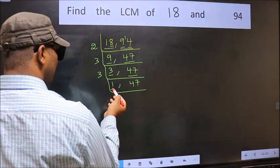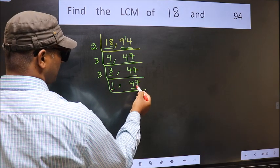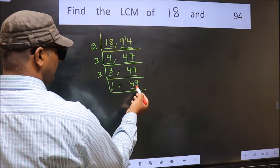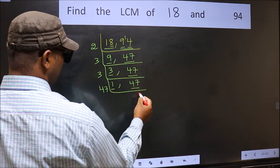Now we got 1 here so focus on the other number 47. 47 is a prime number so 47 once 47.